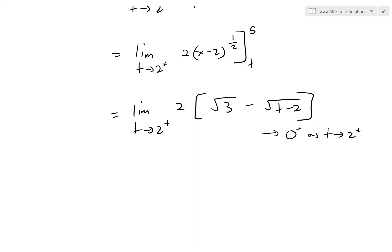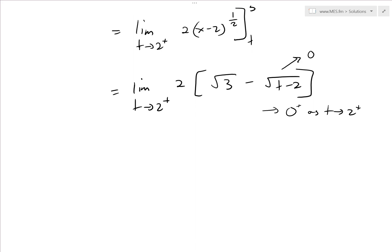If it was approaching from the left side, this would not be a real number. So this goes to 0, and all we're left with is 2 times square root 3.